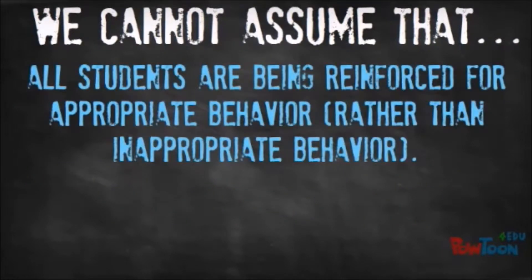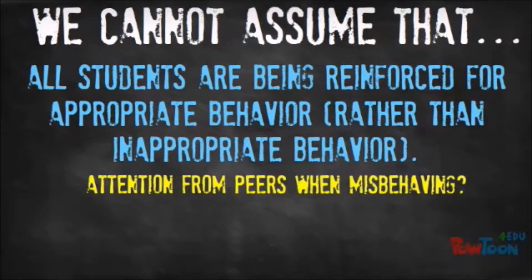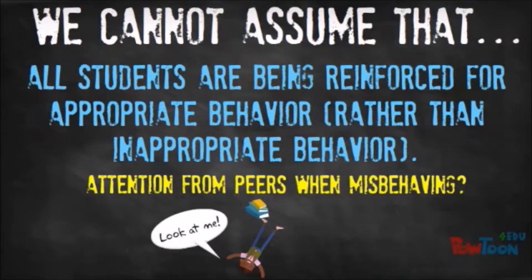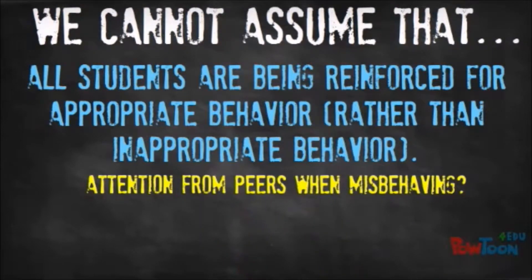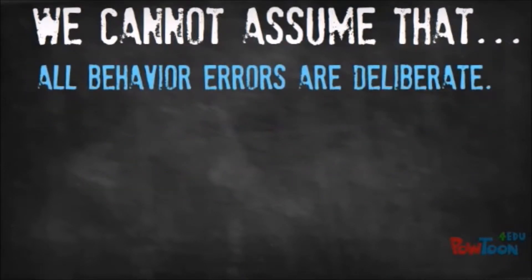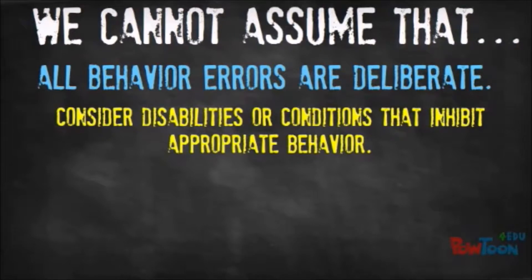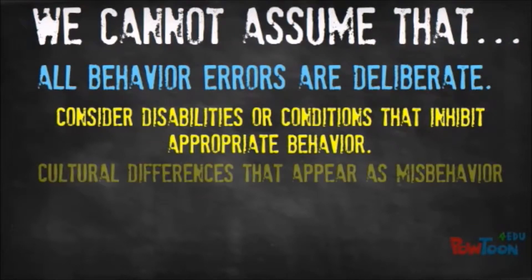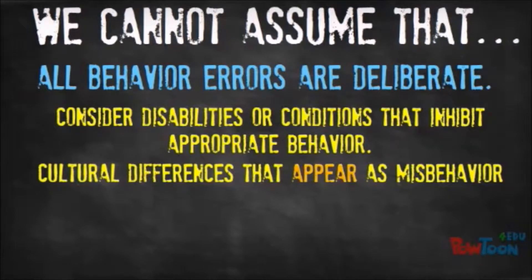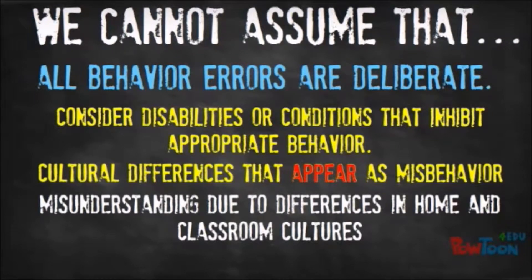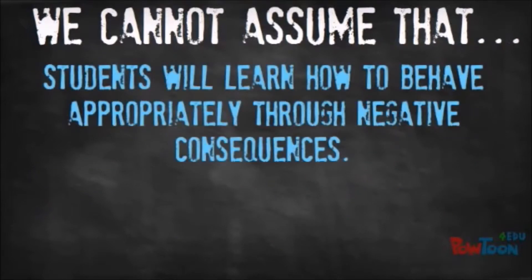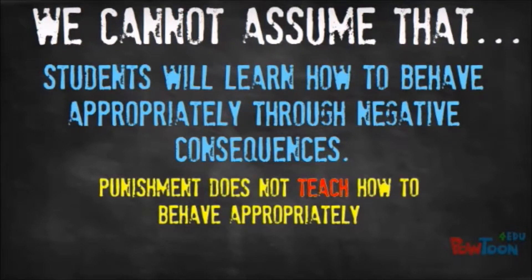We can't assume that all students are being reinforced for appropriate behavior rather than inappropriate behavior. If students like attention, they might find it's much easier to get attention for behaving inappropriately — especially from peers and teachers — than for behaving appropriately. We can't assume that all behavior errors are deliberate. Sometimes students have disabilities or conditions that inhibit appropriate behavior, or there are cultural differences that can appear as problem behavior. Punishment doesn't teach how to behave appropriately.